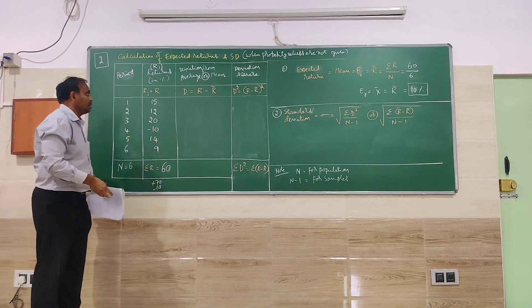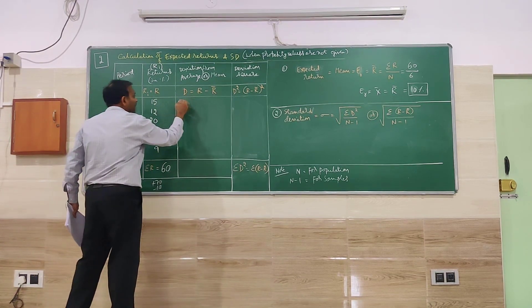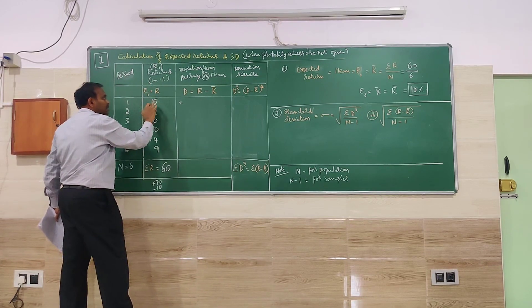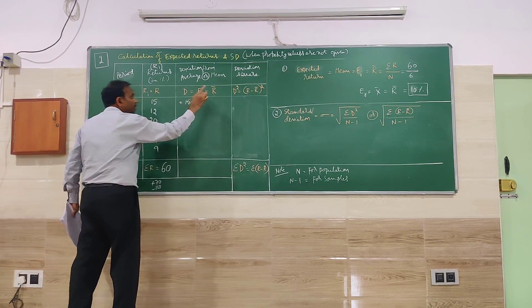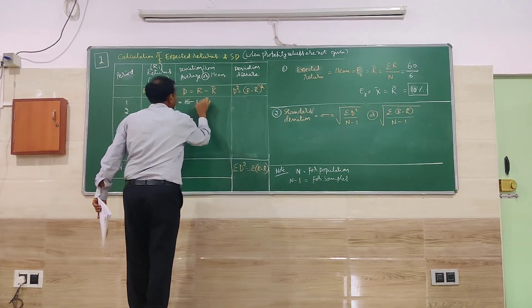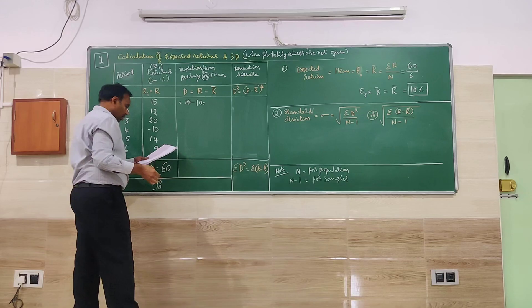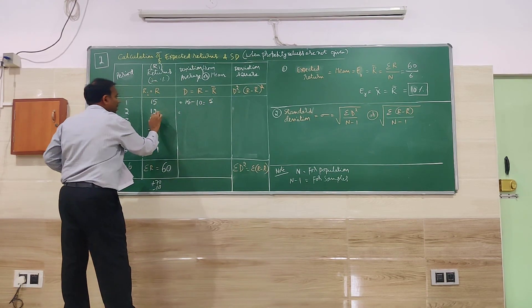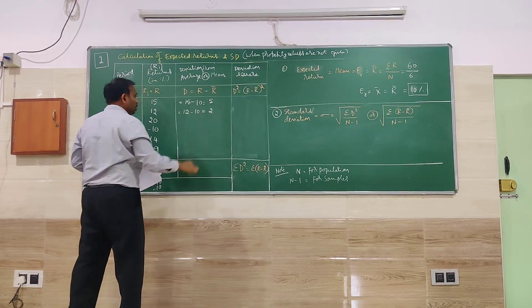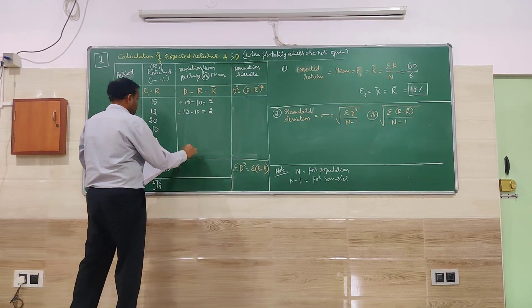So we are finding D here. So R or Ri represents returns. 15 minus R bar. R bar is 10, so minus 10. So 15 minus 10, that is going to be 5. Next, 12 minus 10 is equal to 2. Next, 20 minus 10 is equal to 10.